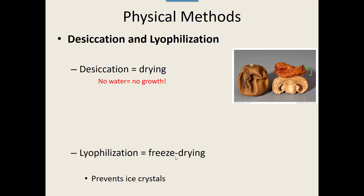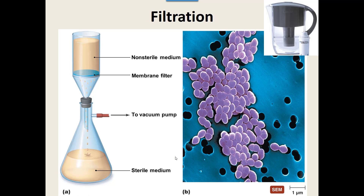Another way to get rid of microorganisms is to physically remove them from a fluid using a filter. Many of you may have a Brita or similar water filter, or water bottles with built-in filters, which catch small microorganisms. They generally aren't meant to catch viruses, but they will catch larger bacteria. You're not killing the organisms, but you're removing them from what you're going to drink.